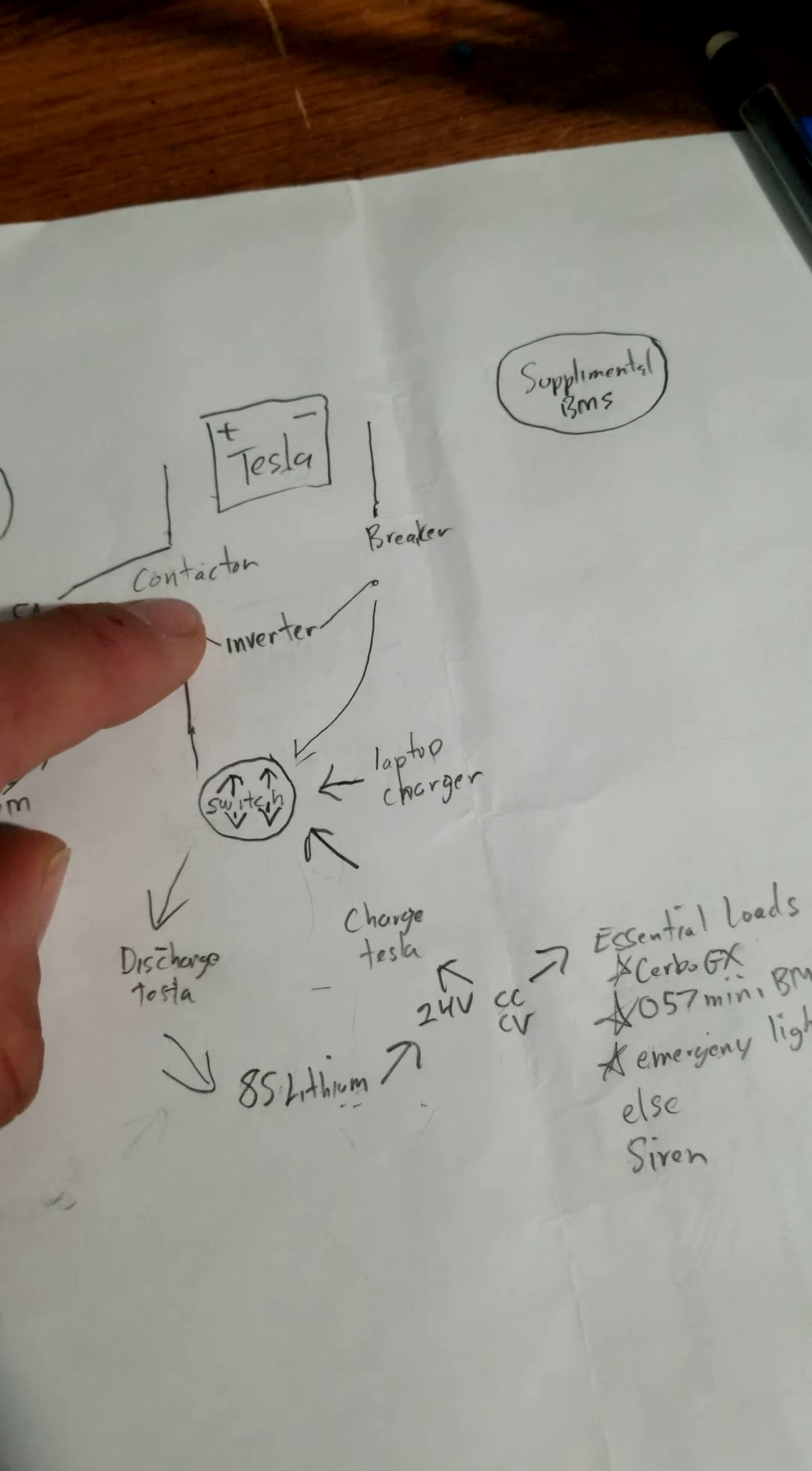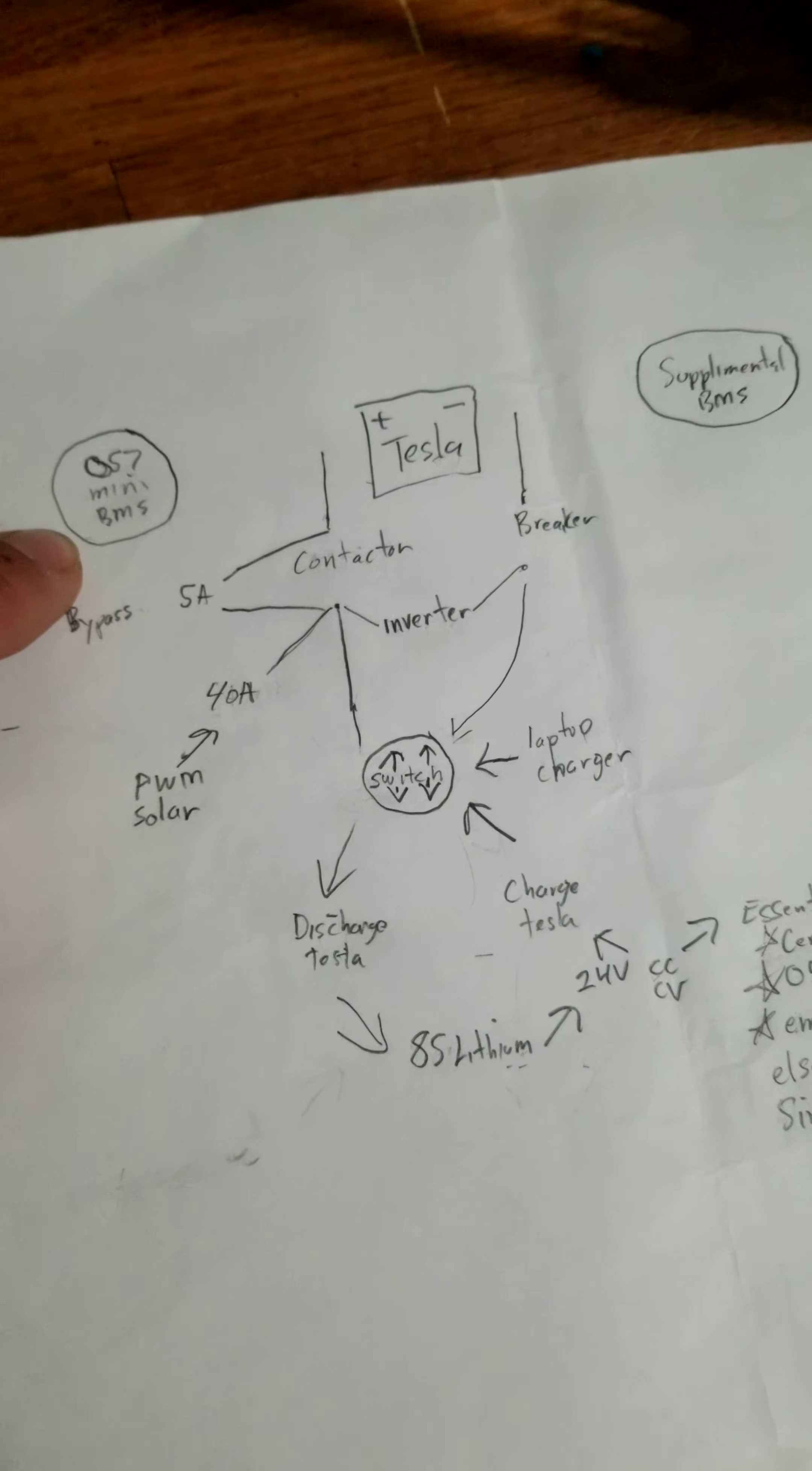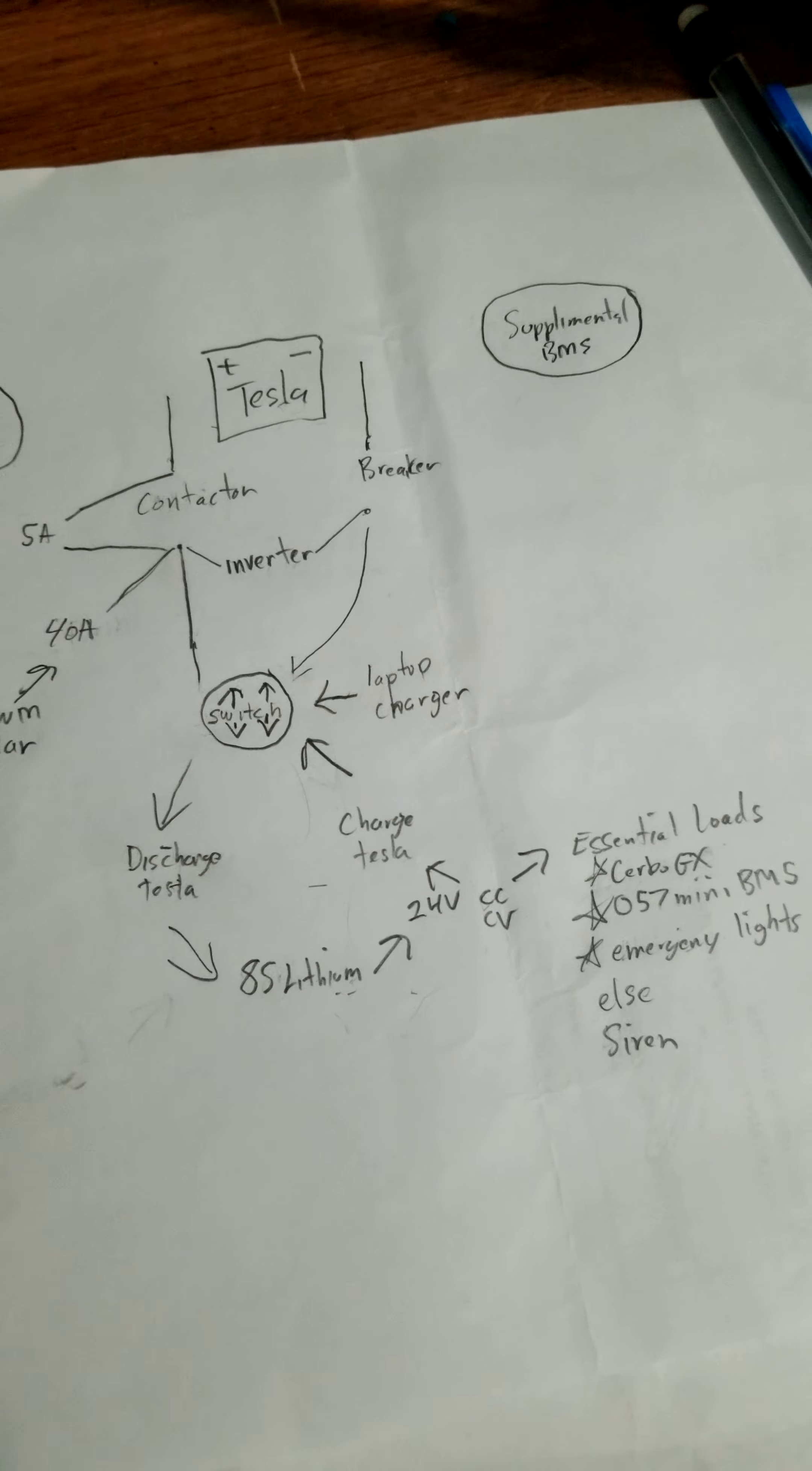Which is going to automatically trip this 5 amp breaker restoring control of the contactor to the 057 mini BMS. So essentially this whole automated system right here is going to automatically happen once you just take this guy right here and just plug it in.